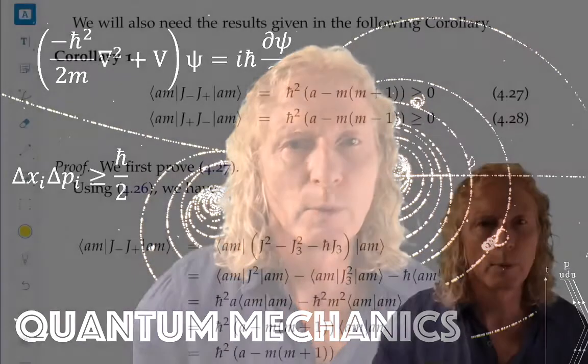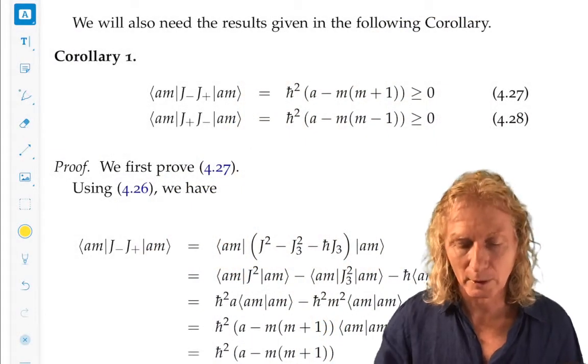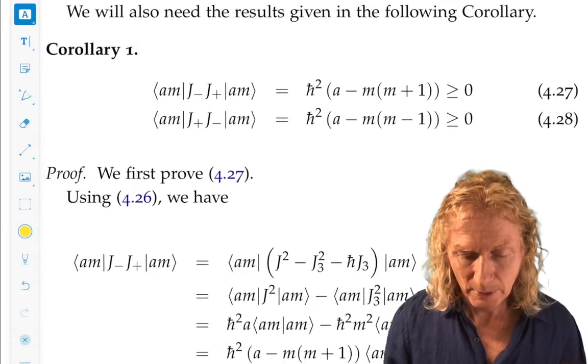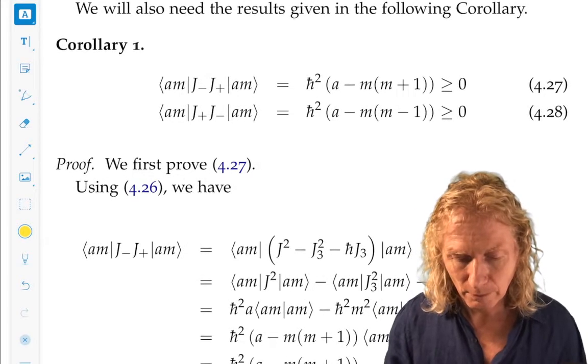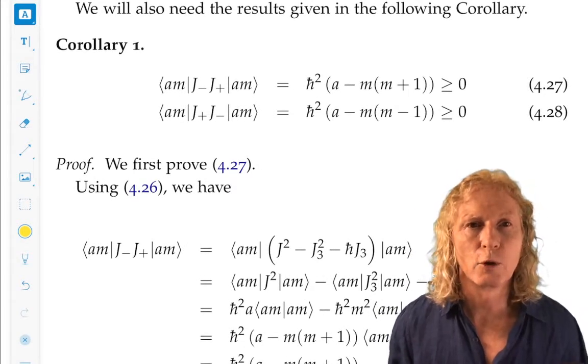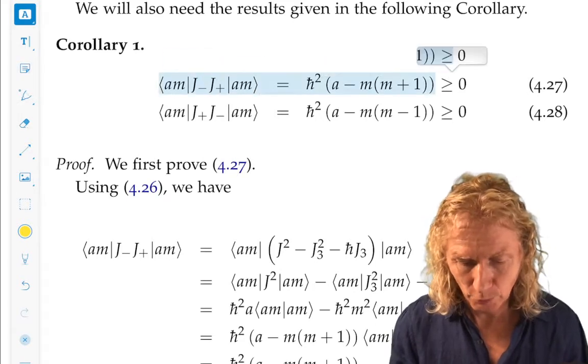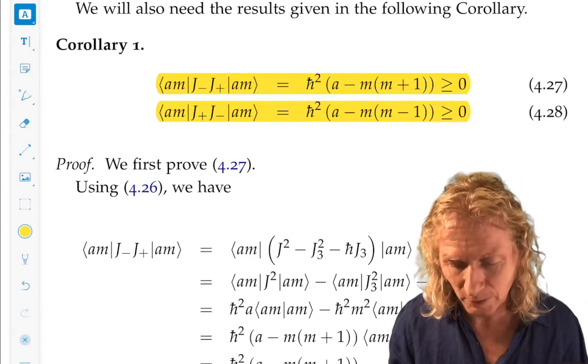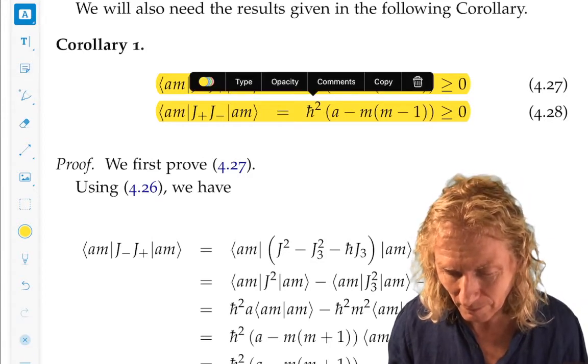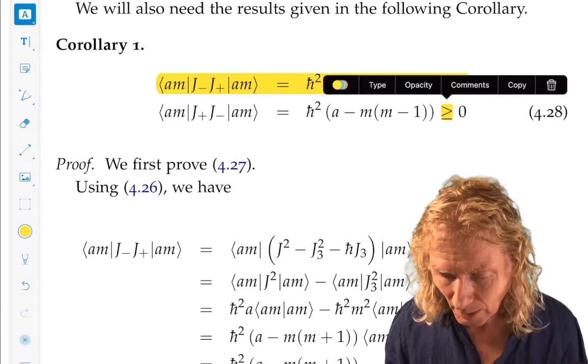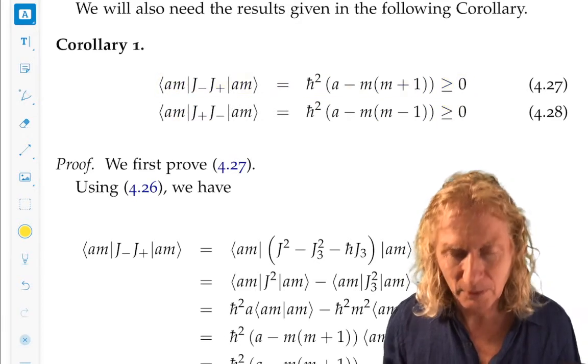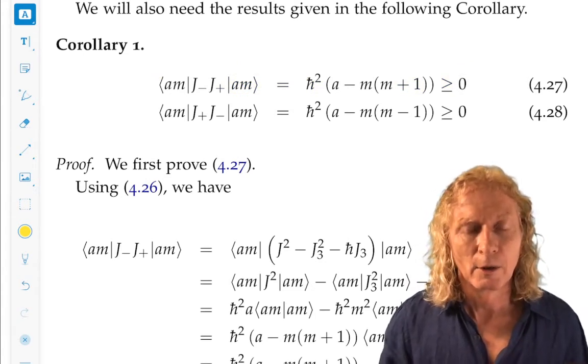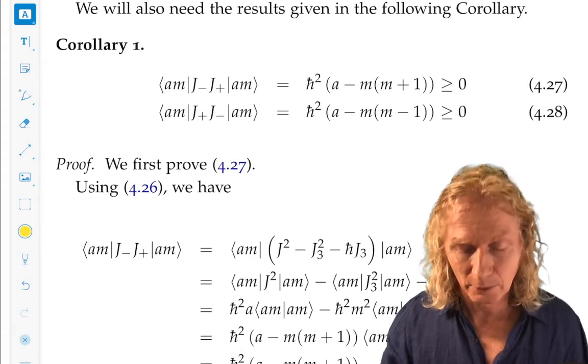Last time we developed the ladder operators, or raising and lowering operators, and their commutation relations. This time we're going to focus on this particular corollary. Two very related expressions, or similar looking expressions. And these two expressions are going to be the heart of our understanding of the eigenvalue eigenstructure.